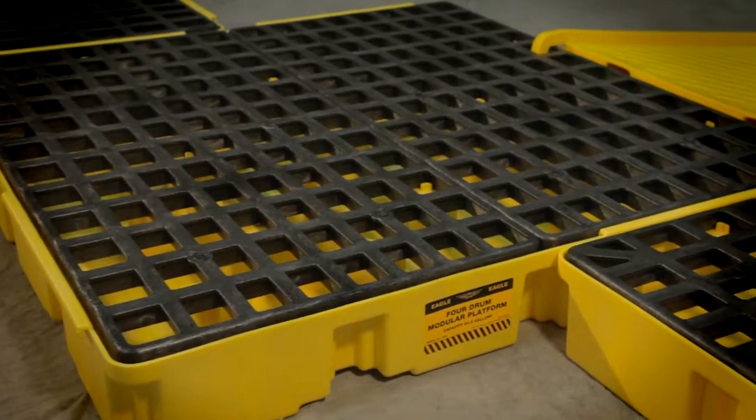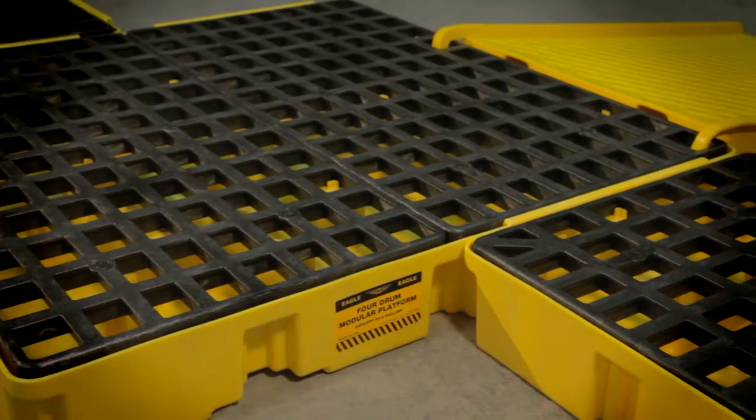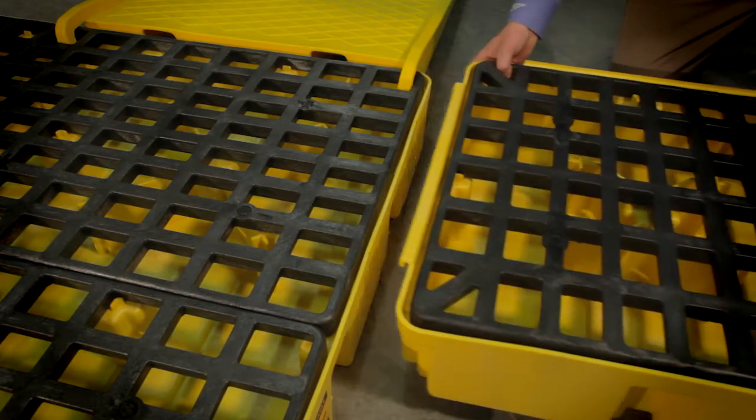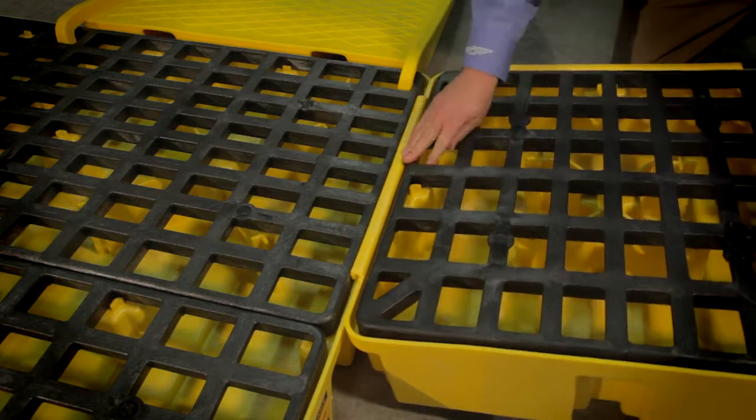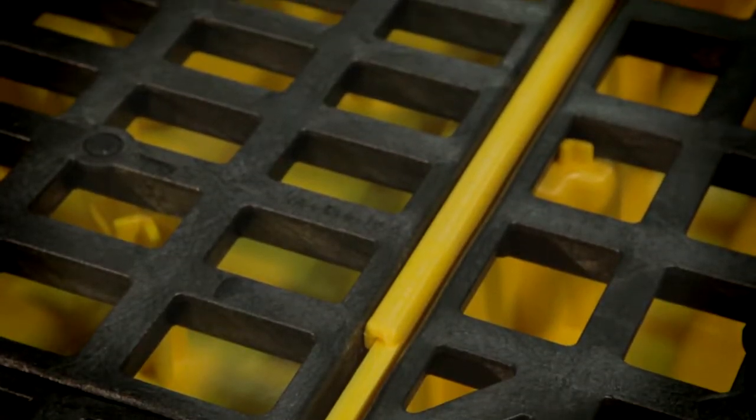Our modular platforms are designed with forklift pockets, removable flat-top grating, and an easy-connecting built-in U-channel for expanding your platform area. Most models come with or without a platform drain.